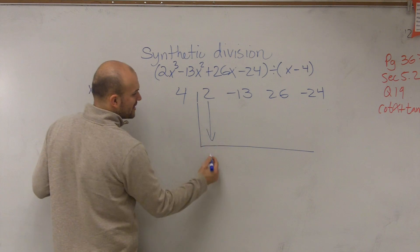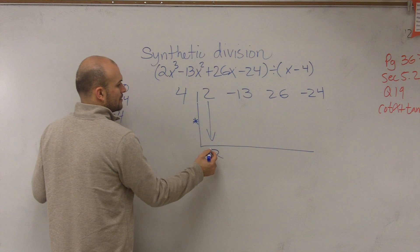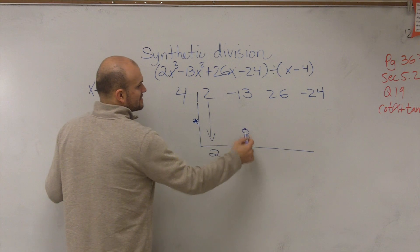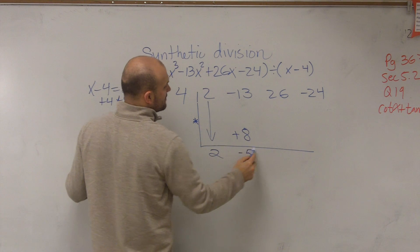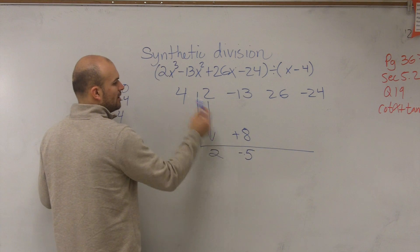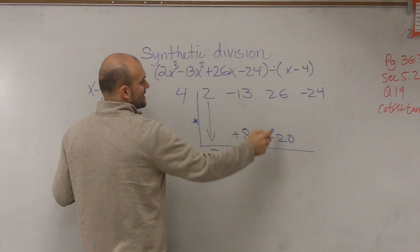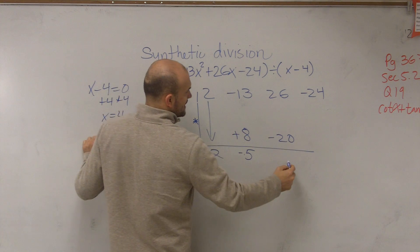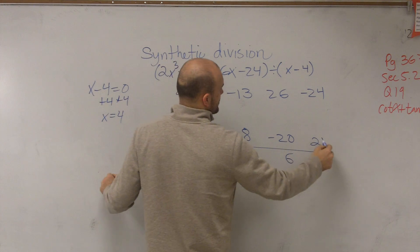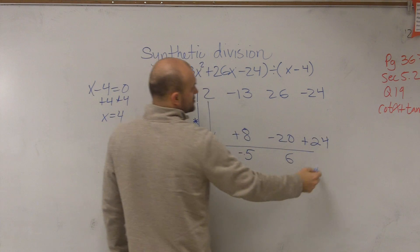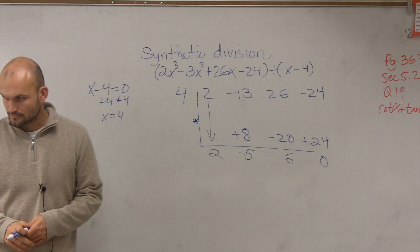First number is a freebie. You bring it down, which is your 2. Then you multiply. 2 times 4 is 8. Then you add. Negative 13 plus 8 is going to be a negative 5. Then you multiply. Negative 5 times 4 is a negative 20. Add. 26 plus a negative 20 is going to be now a positive 6. Multiply. 6 times 4 is positive 24. Add. Negative 24 plus 24 is a 0.